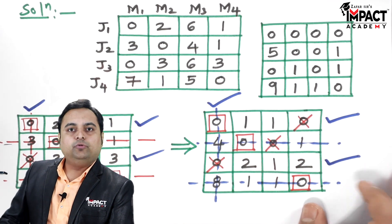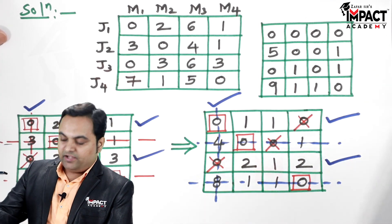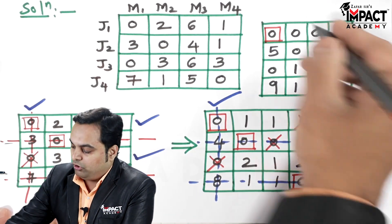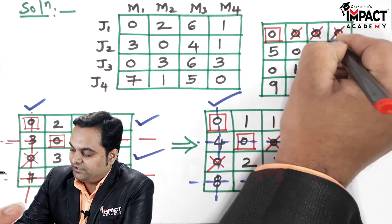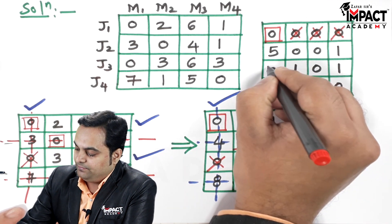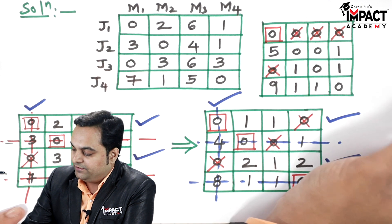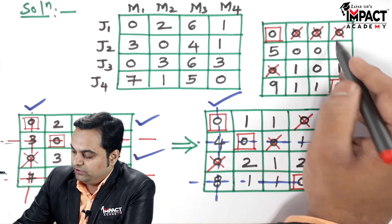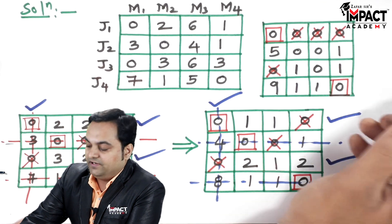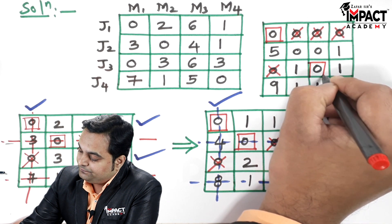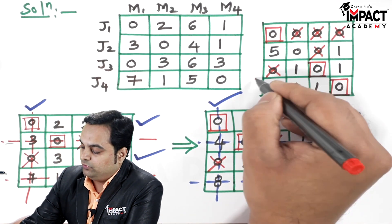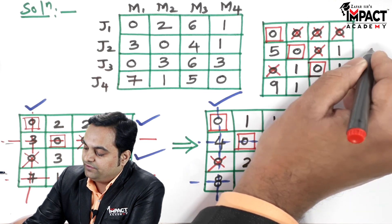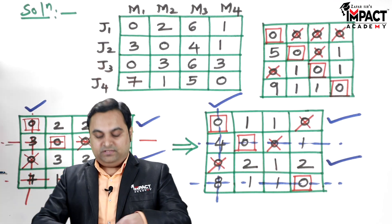Now make the final assignment. Assign row 1 — all other zeros in that row and the zero in that column are cancelled. Assign row 4 column 4 — no other zeros conflict. Assign row 3 column 3 — that zero is cancelled. Finally assign row 2 column 2 — no other zero is present in that row or column. All four rows are now assigned.